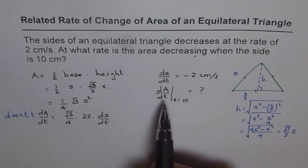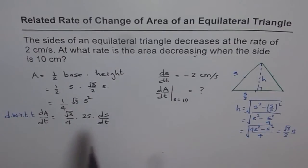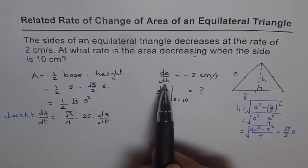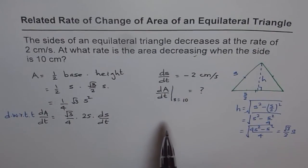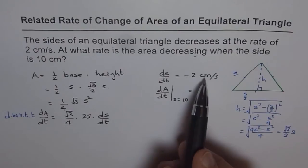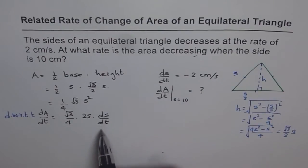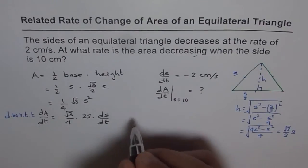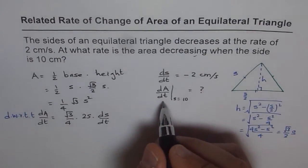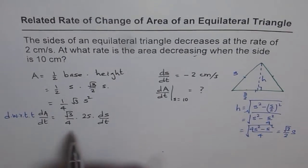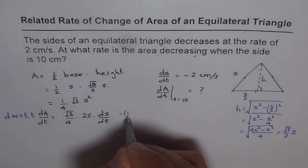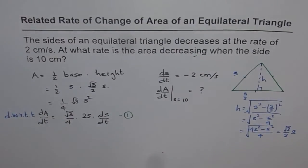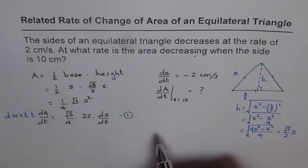Now, we need to find rate of change of area when side is 10. So we can put S as 10, and dS/dt we know is changing at the rate of minus 2 centimeters per second. So we'll put minus 2 centimeters per second for dS/dt, and then we'll get the answer. So let's figure out what dA/dt is when S equals 10. So in this equation, which is our equation number 1 for rate of change of area, we'll substitute the given values.